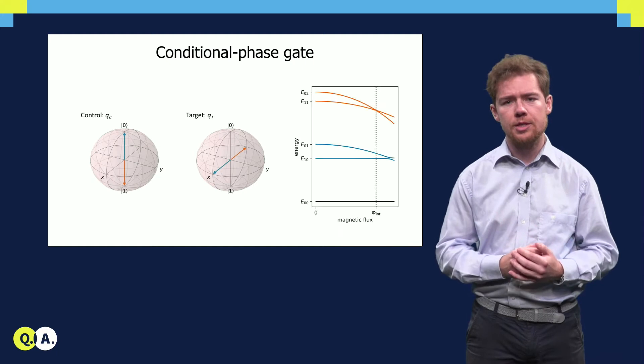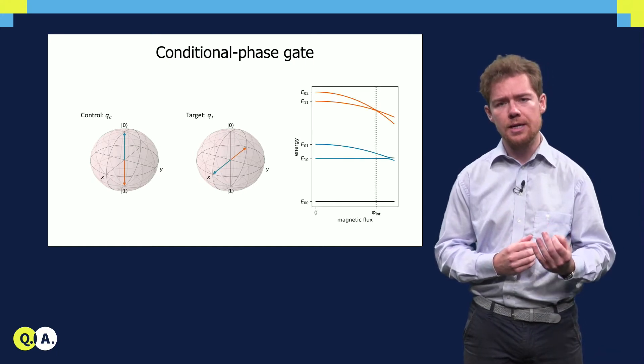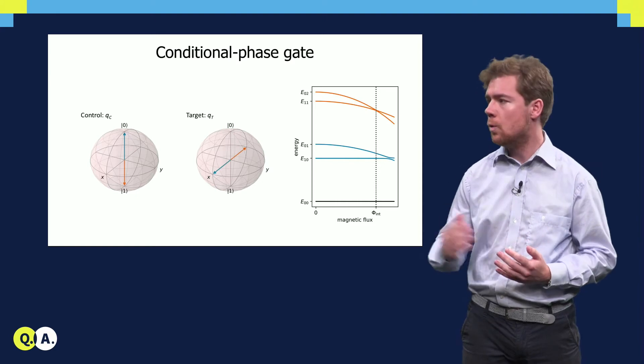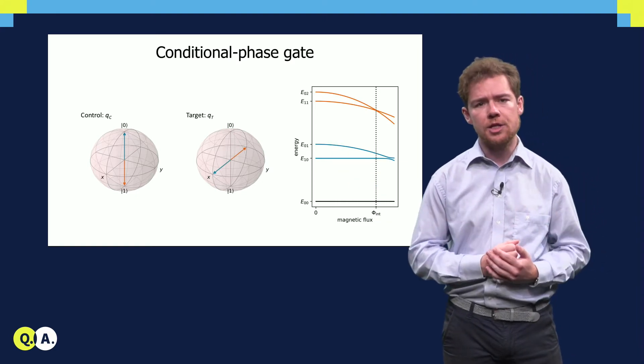In transmon qubits, the c-phase gate is implemented by tuning in and out of resonance with an interaction in a two-excitation manifold.